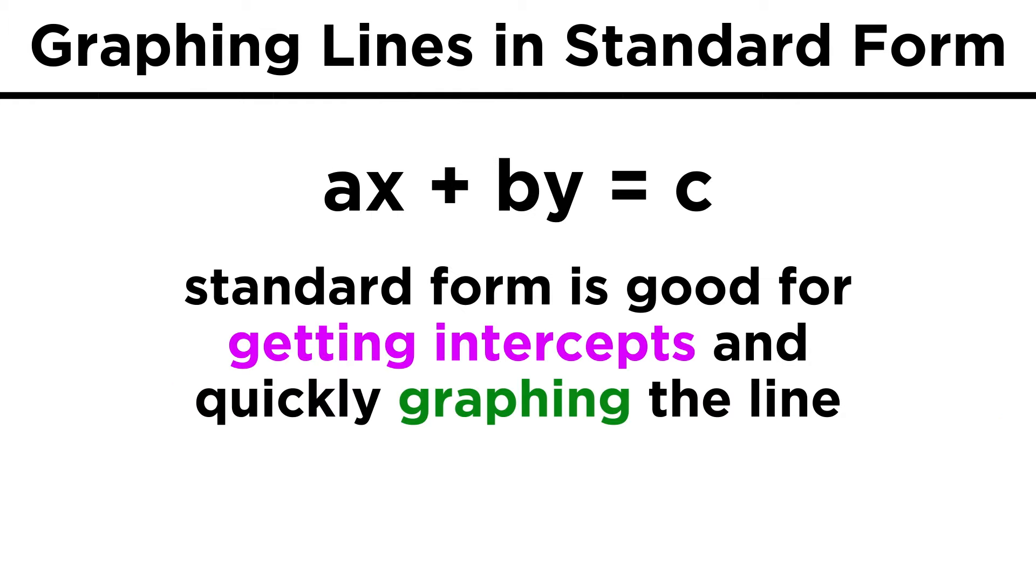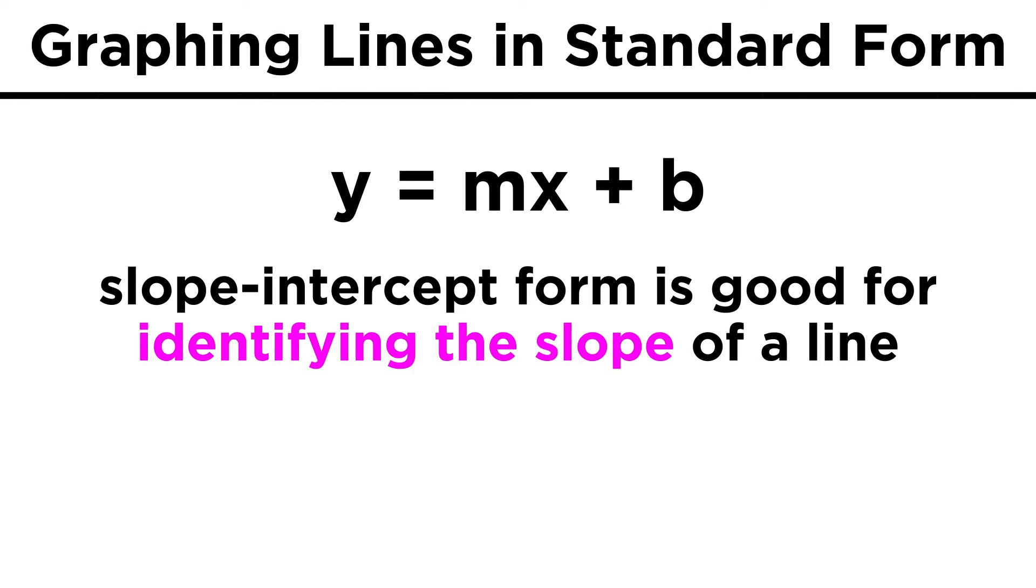So we should note that standard form is useful when trying to find the intercepts of a line, and when trying to quickly graph the line. However, if we want to talk about the slope of the line, it's a little trickier, and slope-intercept form is better for that, since the slope is listed right in the equation.